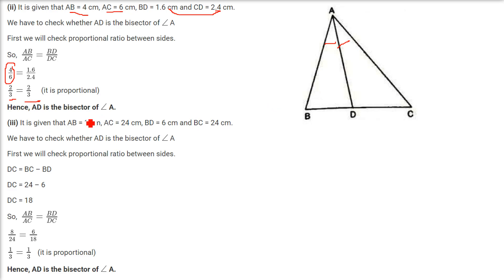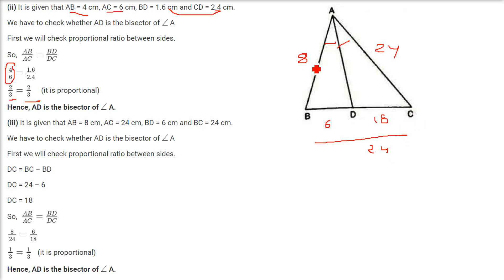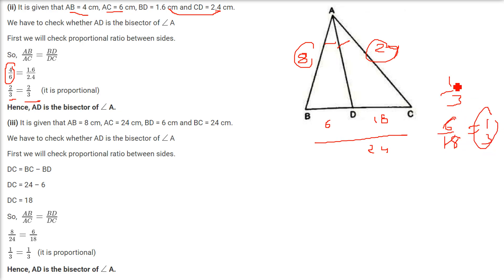Third case: AB is 8, AC is 24, BD is 6 and BC is 24, so DC equals 24 minus 6 equals 18. Then 8 by 24 is 1 by 3 and 6 by 18 is also 1 by 3 — both cases give 1 by 3, so they are proportional, meaning AD is the angle bisector of angle A. Fourth case: 6 by 8 is 3 by 4 and 1.5 by 2 is also 3 by 4 — proportional, so AD is the angle bisector.